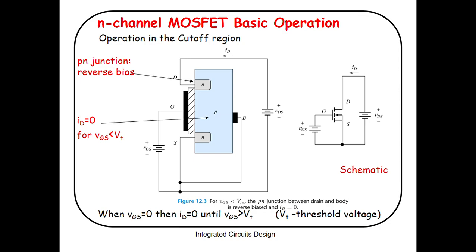Starting from the cutoff region: in the diagram you can see the drain terminal, gate terminal, and source terminal. This is an N-channel NMOS transistor, so there is N-type diffusion at the drain and source terminals, and the gate is connected to the channel via silicon oxide. Your ID will be 0 when VGS is less than VT. This means the device is in the cutoff region — ID = 0 means the device is off.